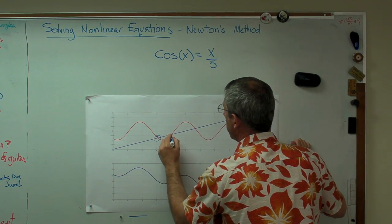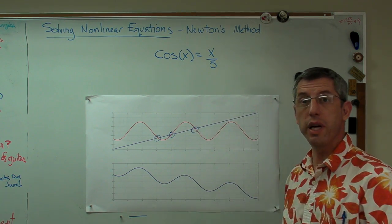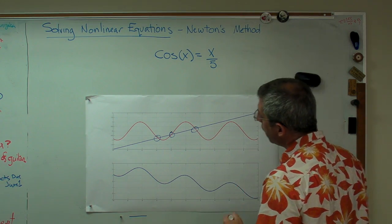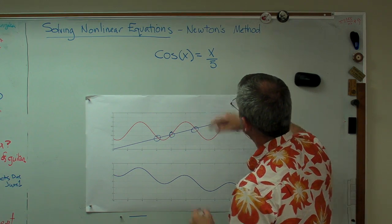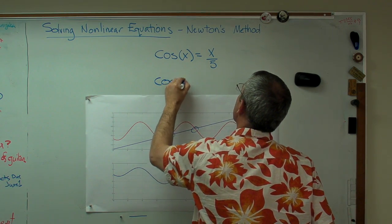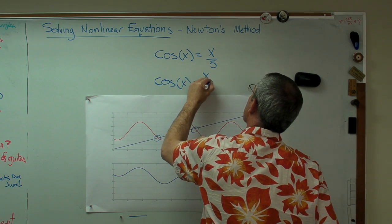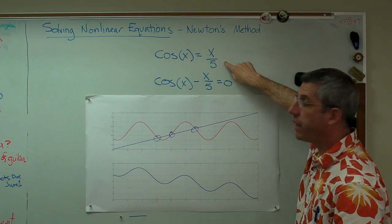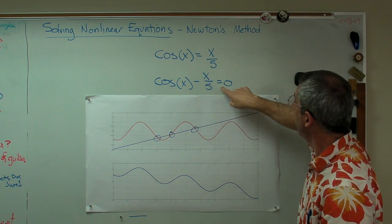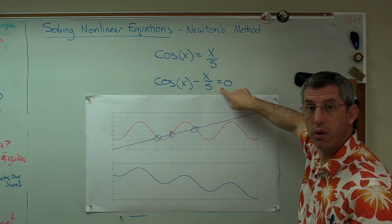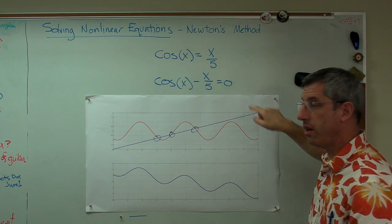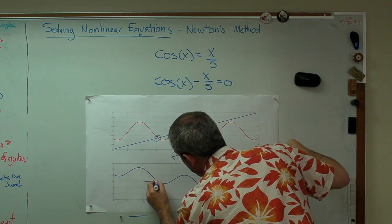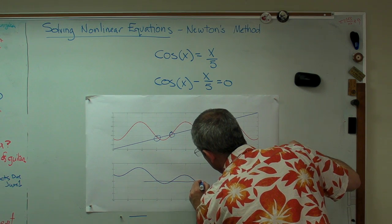And I'm going to get rid of this because this doesn't help us any. So wherever those two cross each other, this expression is true. Well, there's one right there, there's one right there, and there's one right there. So there's three possible roots to this equation. Now, the other way to do this is to rewrite this as cos(x) - x/5 = 0. All I do is subtract x over five from both sides. And now all I'm trying to do is find the root of that equation.